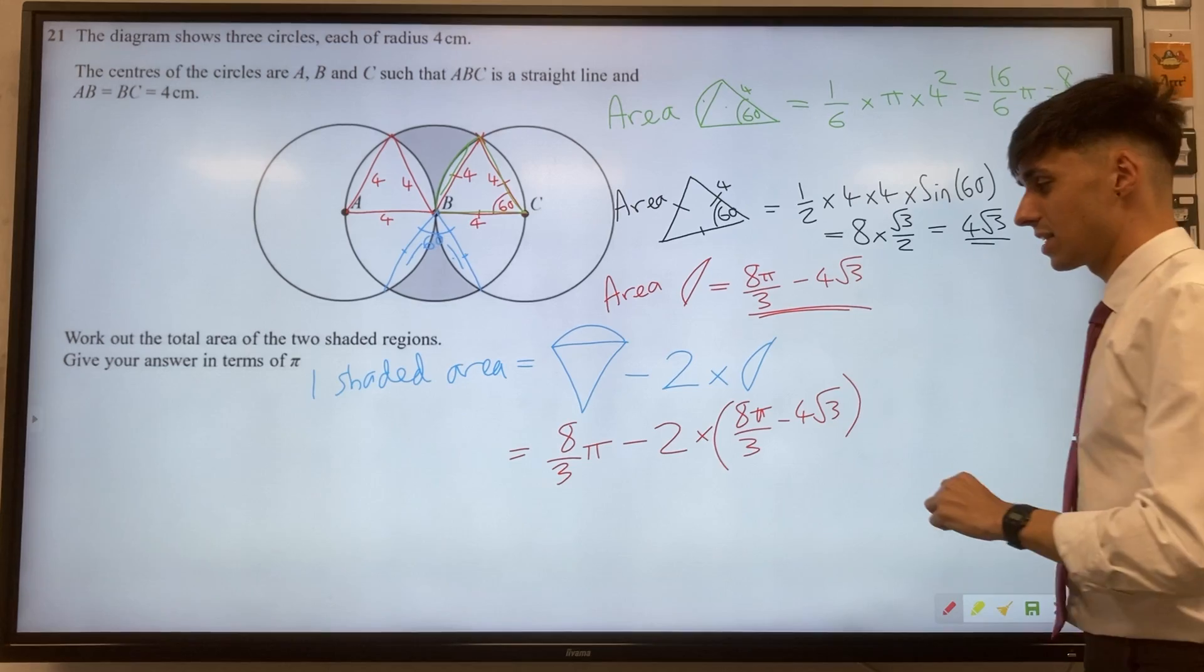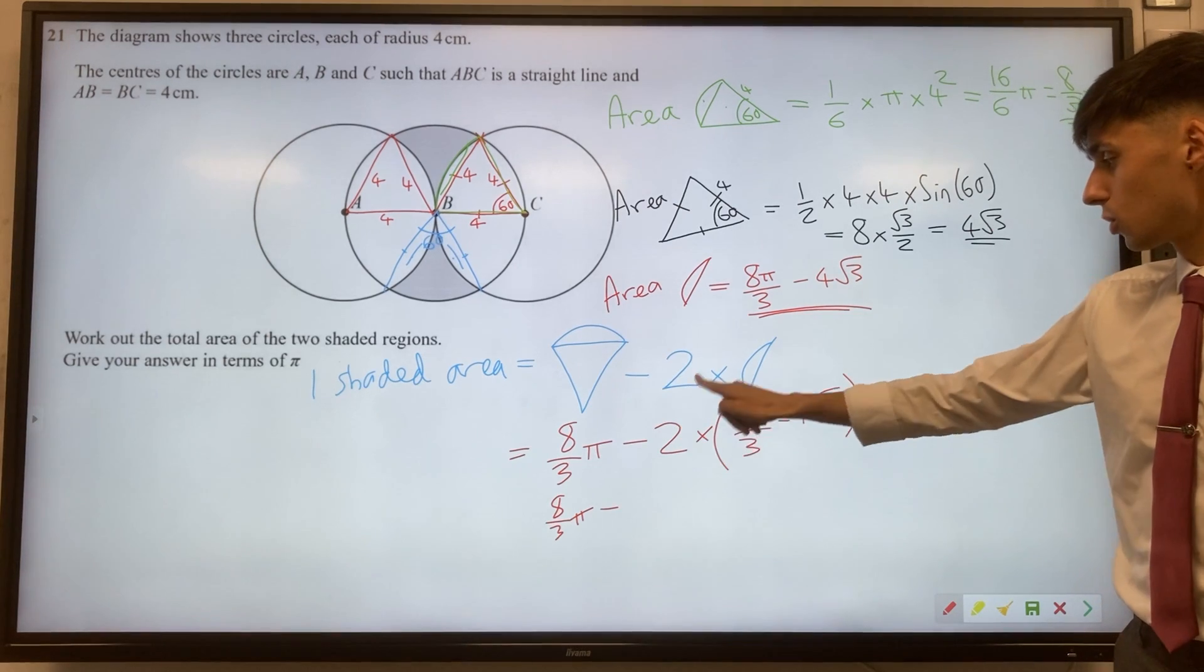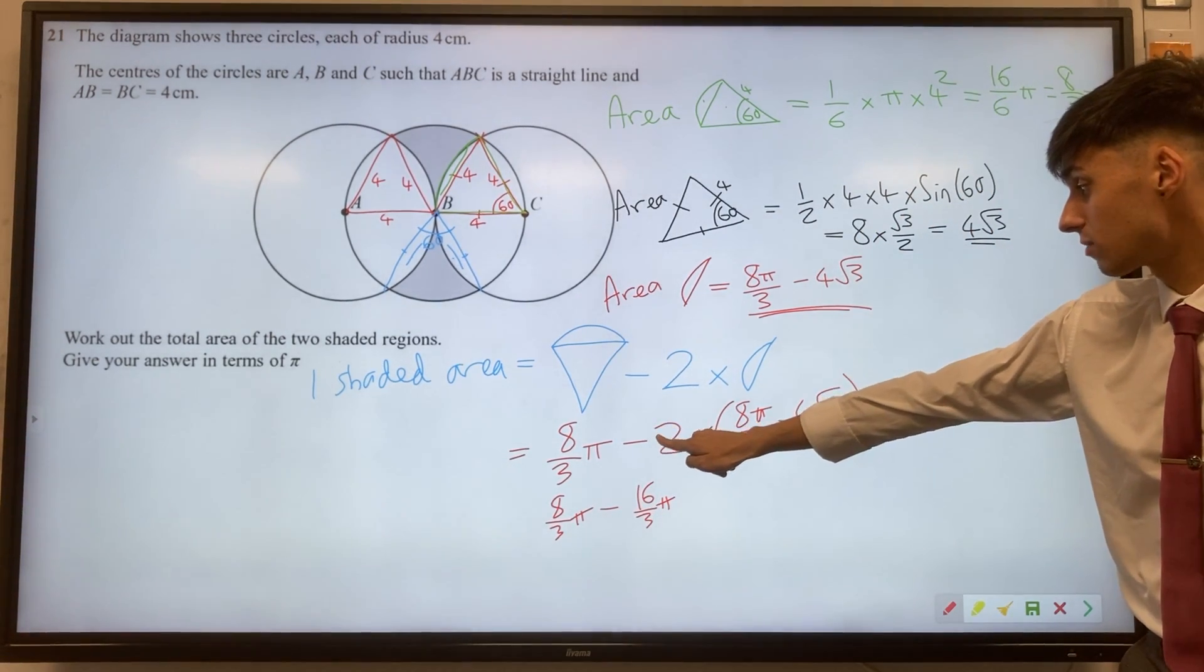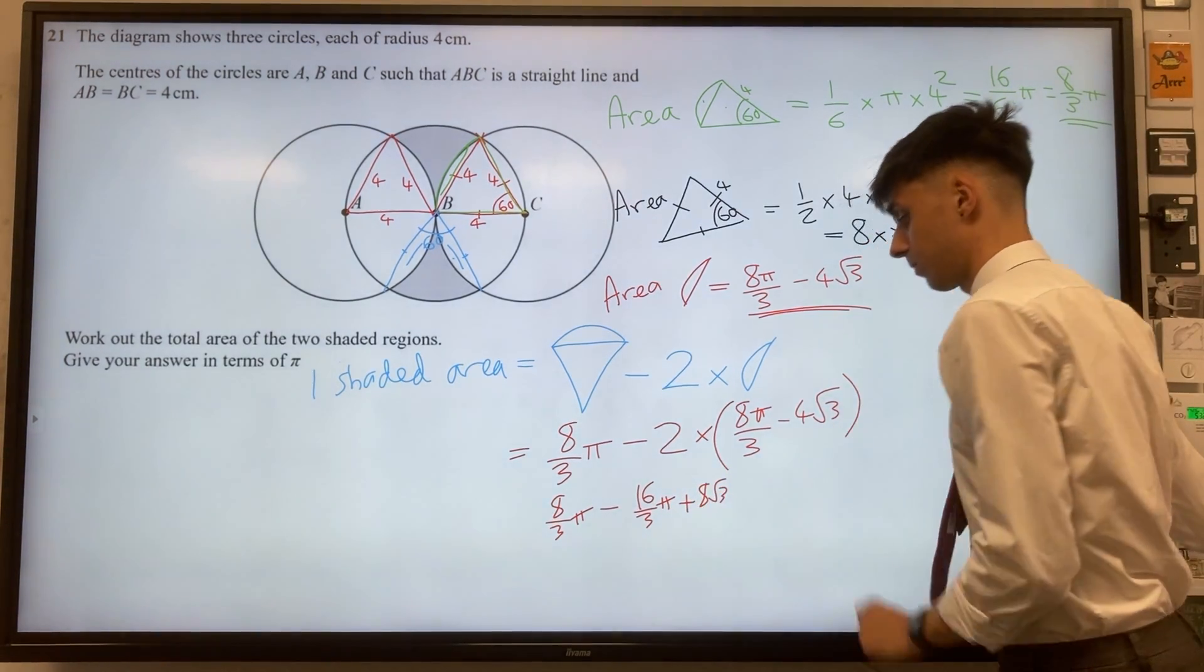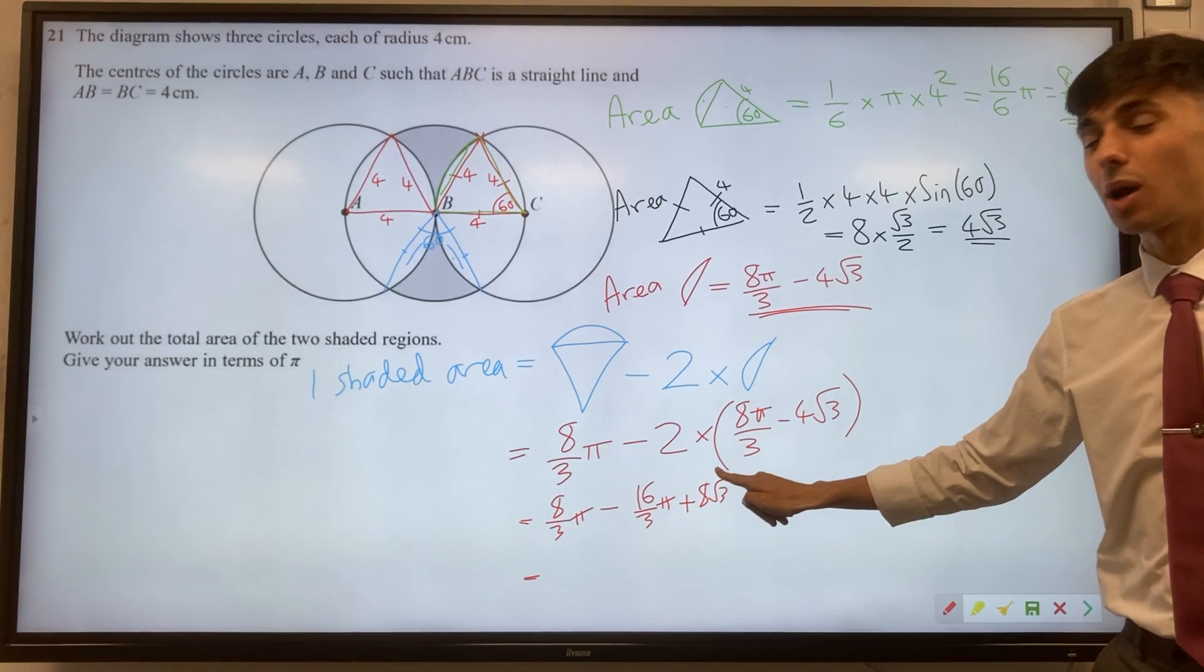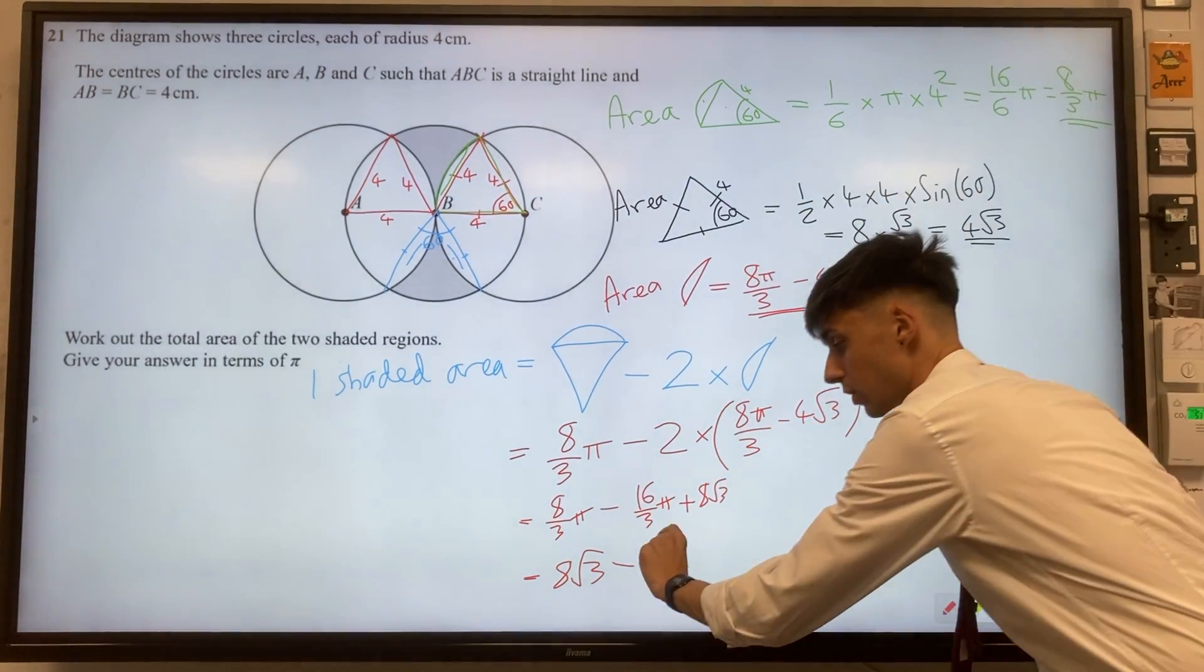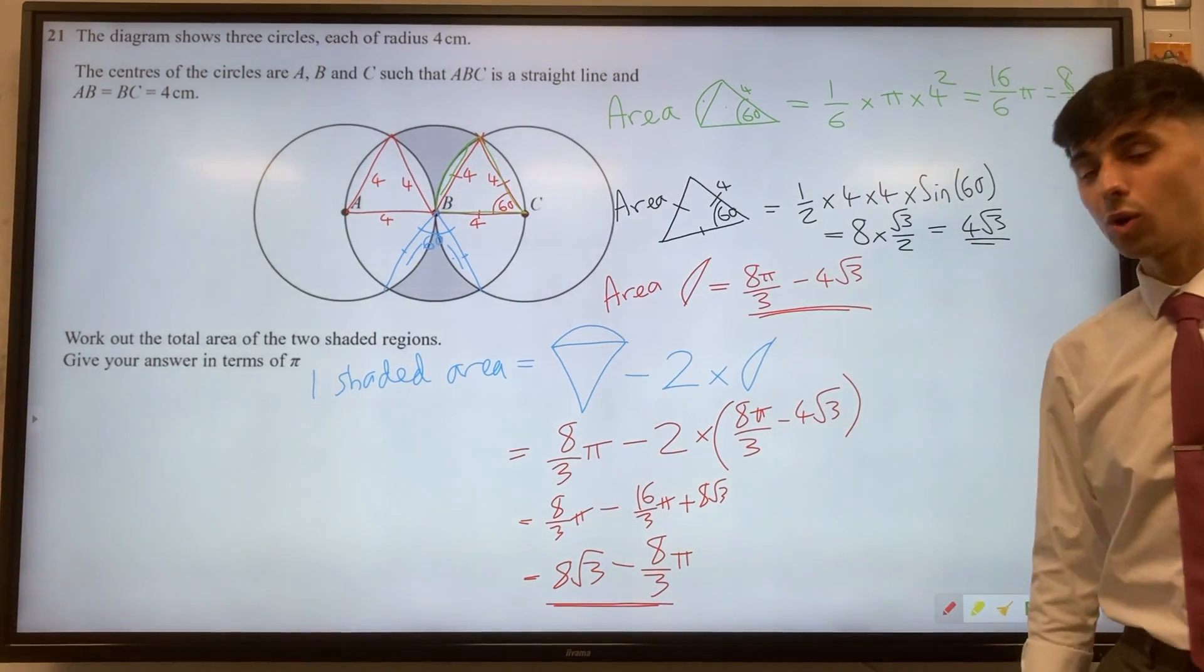Simplifying this, we've got 8π/3 - 2 × 8π/3 would be 16π/3, and be really careful with the negatives. We've got -2 × -4√3, so this would be +8√3. This 8√3 should come first: 8√3 - 8π/3. We're not quite finished though.